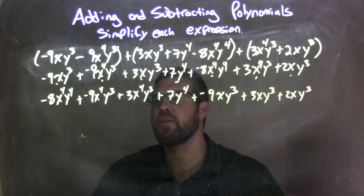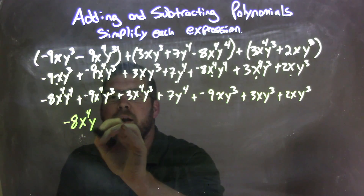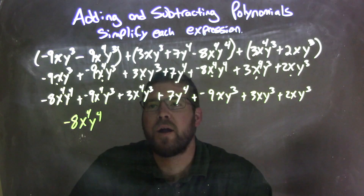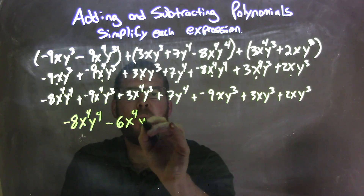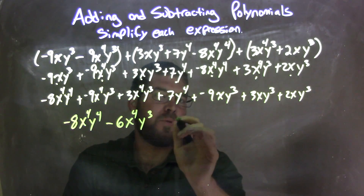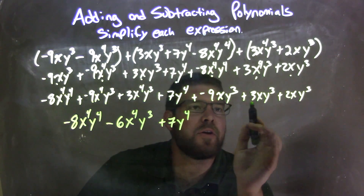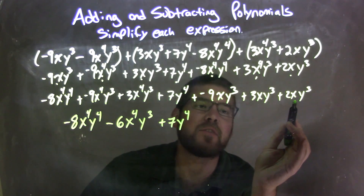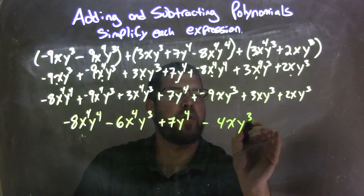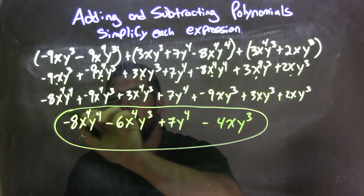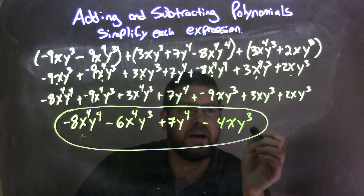Now let's combine my like terms together. Negative 8x to the fourth y to the fourth is the only one like that, so we have negative 8x to the fourth y to the fourth. Negative 9x to the fourth y to the third plus 3x to the fourth y to the third — those two together give a negative 6, so we have minus 6x to the fourth y to the third. Then there's nothing else but the y to the fourth, so we have plus 7y to the fourth. Then we combine: negative 9xy to the third plus 3xy to the third is negative 6xy to the third, plus 2xy to the third is negative 4xy to the third — so that gives us minus 4xy to the third. Our final answer is negative 8x to the fourth y to the fourth minus 6x to the fourth y to the third plus 7y to the fourth minus 4xy to the third.